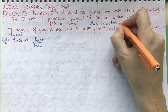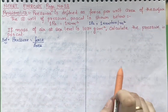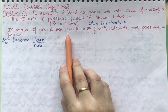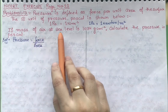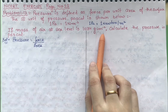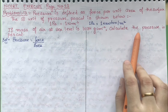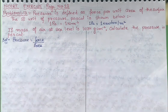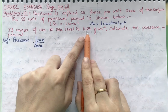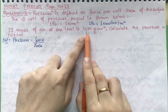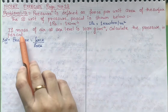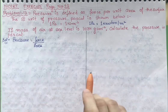If the mass of air at sea level is 1034 gram per centimeter square, we have to find the pressure in Pascal. So the mass of air at sea level is given as 1034 gram per centimeter square, and we have to show the pressure in Pascal. The mass is given in grams, so we need to handle unit conversion.